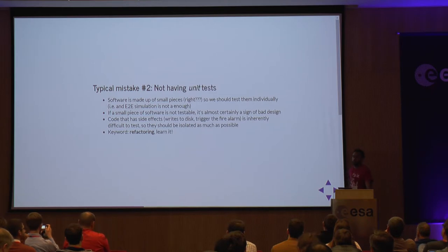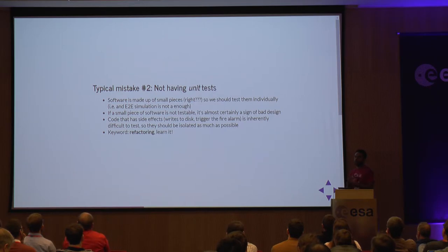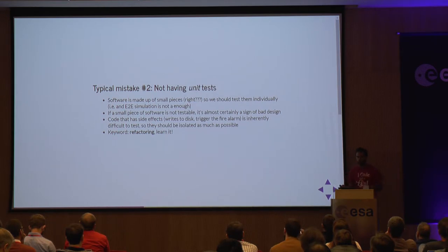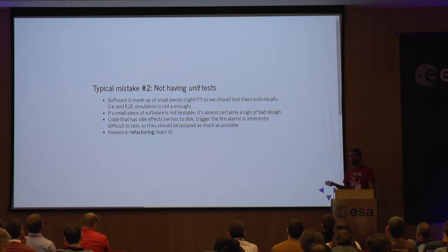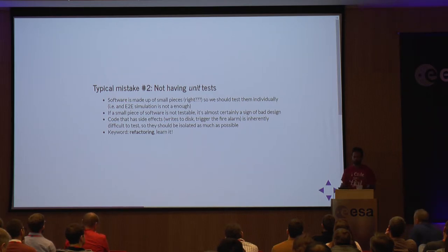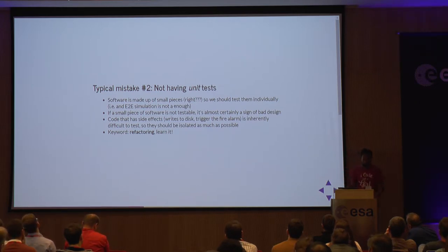Typical mistake number two is not having unit tests. If you write software using functions, modules, and packages, then your tests should be small pieces as well. Take individual pieces of the software and test them individually as much as possible. If a small piece of software cannot be tested or is difficult to test, that might be a sign of bad design already — and we can try to refactor. I've linked some resources in the online slides for further reading.